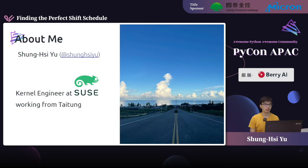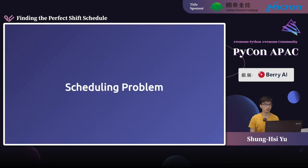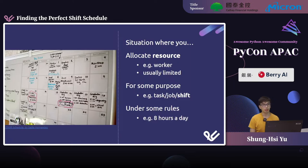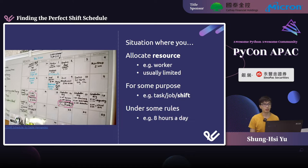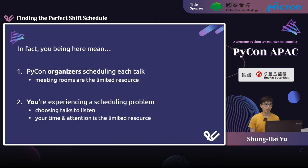Enough about me, let's talk about some scheduling problems. So what are they? Generally speaking, a scheduling problem is when you have to allocate some kind of resource. For example, human resources like workers, and they are quite limited. You have to allocate them for some purpose — some tasks, some jobs, or some shifts — under certain rules. For example, a worker may not work more than 8 hours a day.